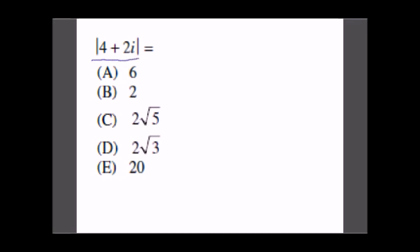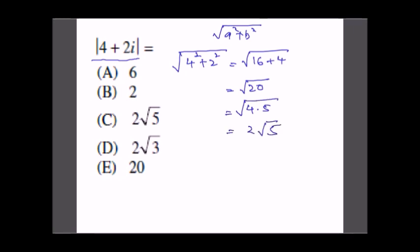We have to compute the modulus of 4 + 2i. As we all know, the definition of modulus is very simple: √(a² + b²). So here we have √(4² + 2²), which is √(16 + 4) = √20, which is equal to √(4 × 5), and which is equal to 2√5. So part C is the answer.